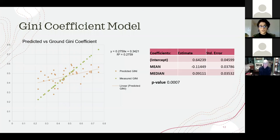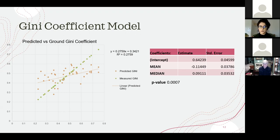The first model is the Gini coefficient model. The R-squared of the model was 28%, and the predictor variables were mean and median. However, when looking at the graph comparing predicted versus measured values, it over-predicted areas with low structural diversity and under-predicted areas with high structural diversity.